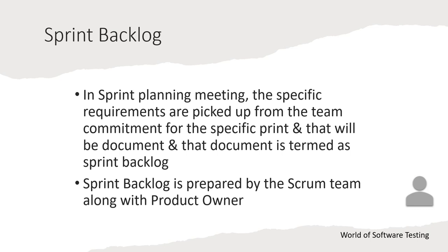Those picked requirements are documented in a document called the sprint backlog, which contains the specific requirements for the upcoming sprint. This is decided by the scrum team based on their commitment. The scrum team picks requirements for the particular sprint based on an estimation process that happens during the sprint planning meeting, and certain requirements are then frozen for that sprint.